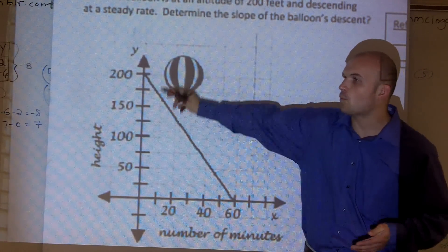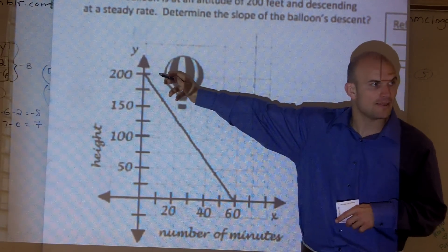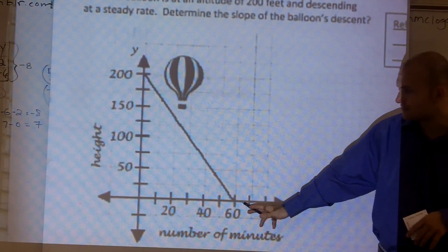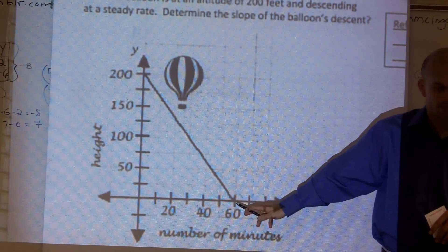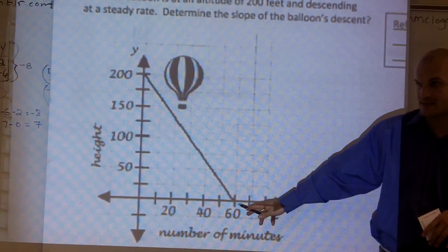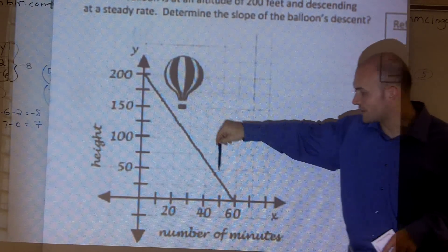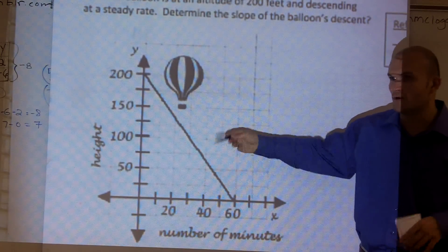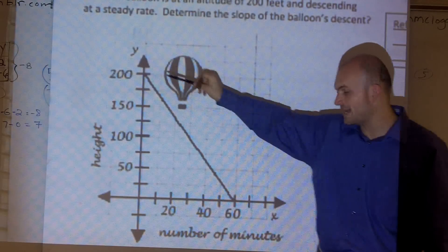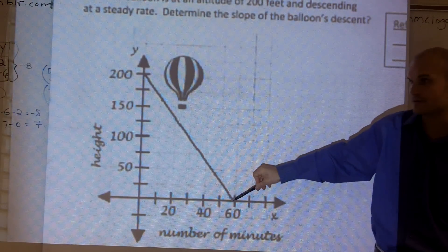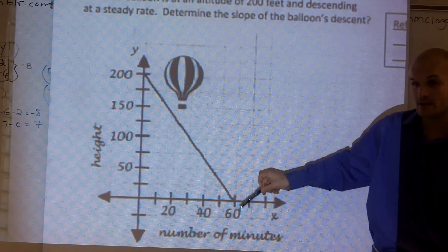So the y is at 200. Then, at the end, when the height is zero, it took 60 minutes. So from here to here, what was the change in y? I started at 200 and ended at zero.